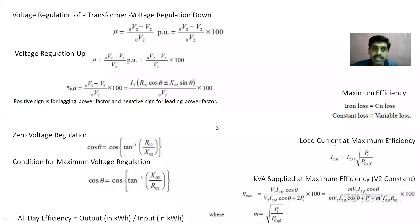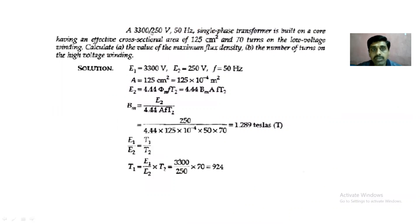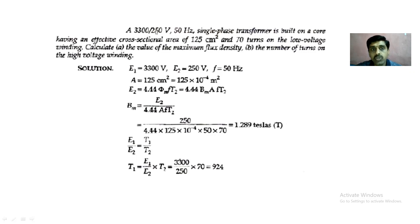We will now see problems on single-phase transformers, and also some problems on three-phase transformers. Let us have some more problems based on the theory discussed. The first problem: a 3300/250 V, 50 Hz transformer is built on a core having an effective cross-sectional area of 125 cm². There are 70 turns given on the low-voltage winding, that is the 250 V side. Calculate the value of the maximum flux density and the number of turns on the high-voltage winding.